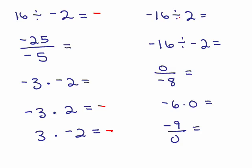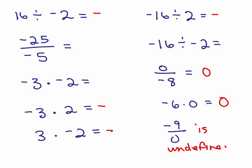Going up to the next column: one negative sign, so the answer is negative. Two negative signs, so the answer is positive. Now these next three are dealing with zero. Zero divided by anything is simply zero. Zero times anything is zero, and any time you divide by zero, it's not even equal to anything — it is undefined, so this one is actually just undefined.